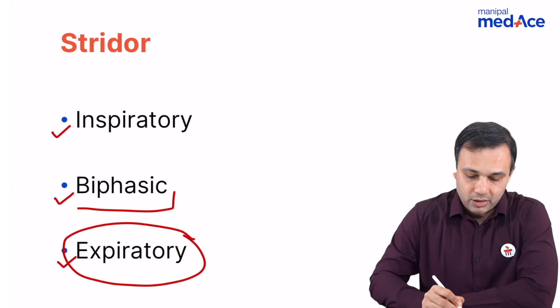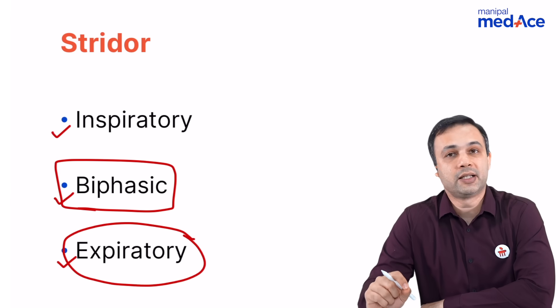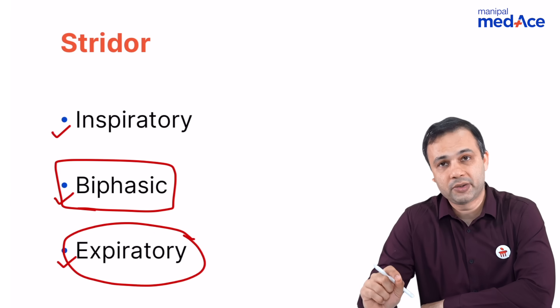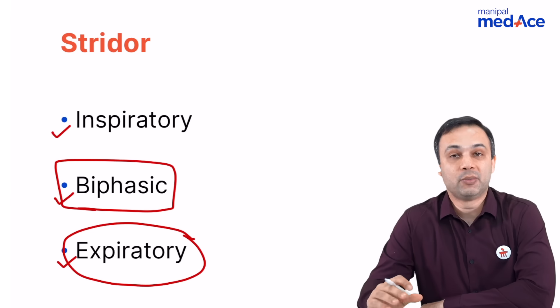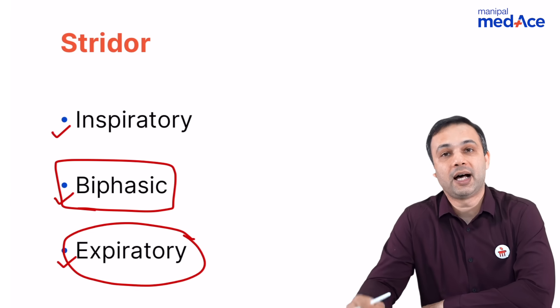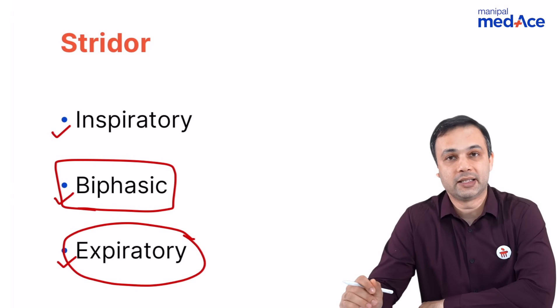The most common causes of biphasic stridor in children can be recurrent respiratory papillomatosis or subglottic stenosis. The most common causes in adults are laryngeal malignancies.